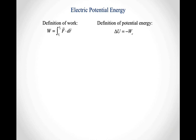In the first semester class, we saw two conservative forces: the gravitational force and the spring force. Each of those had a corresponding potential energy. The gravitational potential energy came from the work done by the gravitational force, and the elastic potential energy came from the work done by a spring. When we combine these this semester, it's going to allow us to define the change in the electric potential energy.